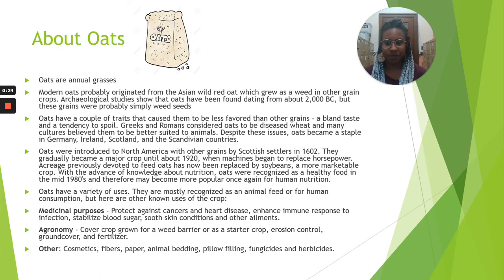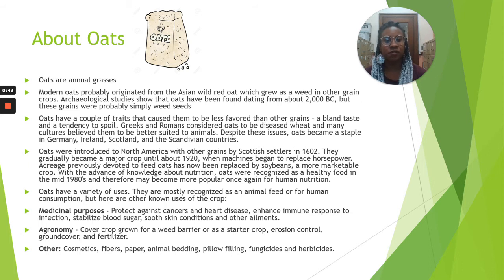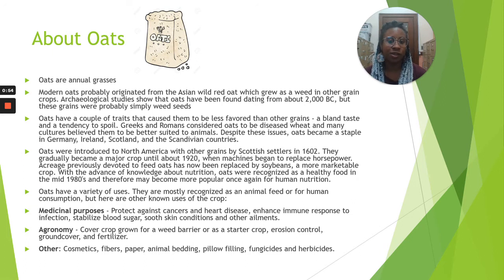Oats are annual grasses. Modern oats probably originated from the Asian wild red oat, which grew as a weed in other grain crops. Archaeological studies show that oats have been found dating from about 2000 BC, but these grains were probably simply just weed seeds. Oats have a couple of traits that cause them to be less favored than other grains, such as a bland taste and a tendency to spoil. Greeks and Romans considered oats to be a diseased wheat, and many cultures believed them to be better suited for animals.